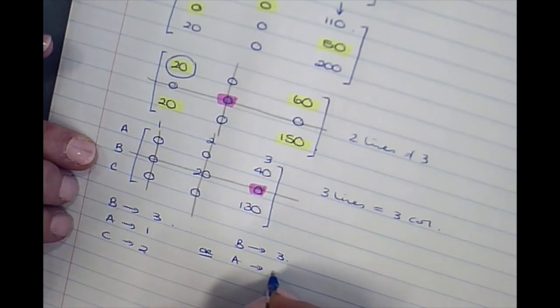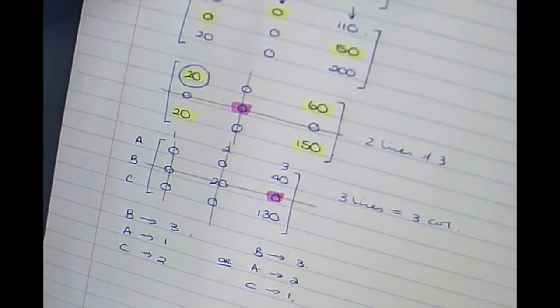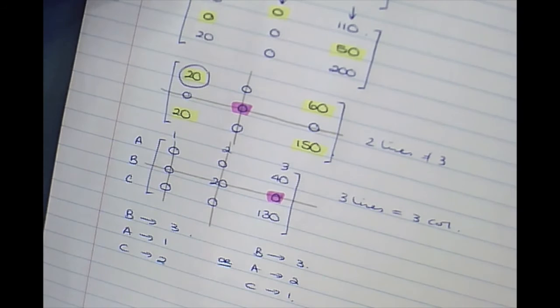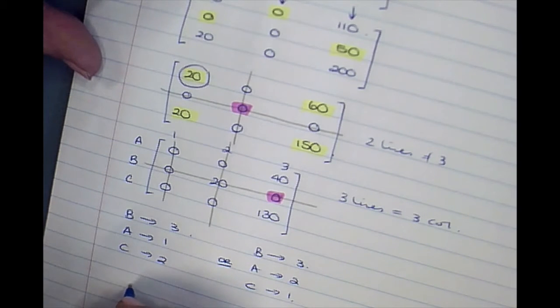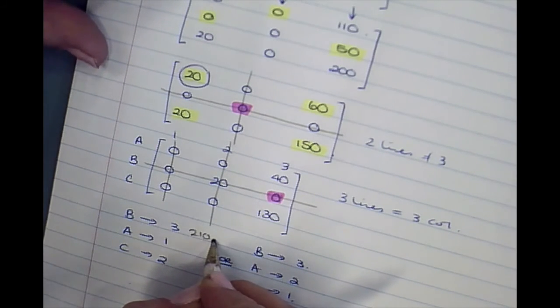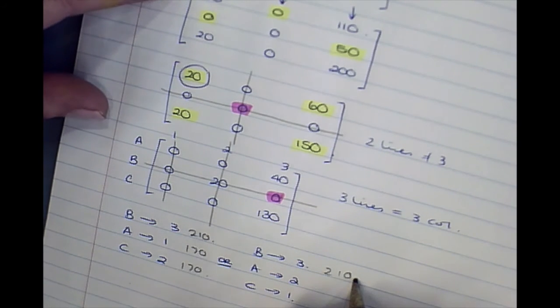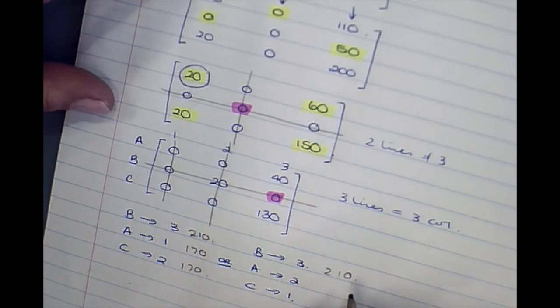A could go to 2 and C could go to 1. Let's see what the cost of that is. B getting 3 is 210. This is 210. A getting 1 is 170. 170. So that's 210. A getting 2 is 150. That's 190.